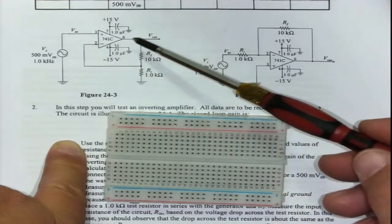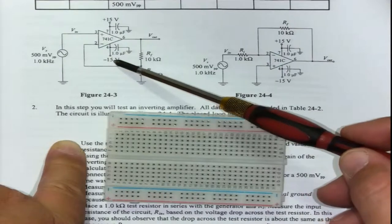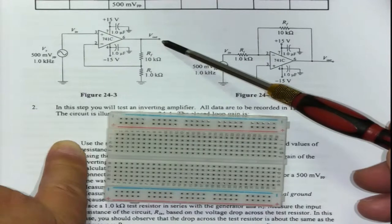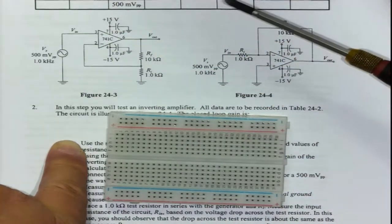Now in textbooks one often doesn't see these two capacitors or even a reference to where the supply is going to be. From this circuit you can notice that the IC itself: pin one is not used, pin two is used, three is used, four is going to minus fifteen volts.